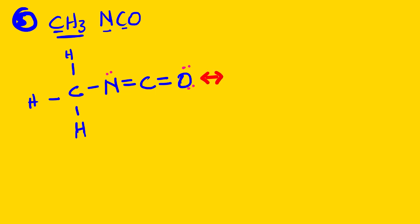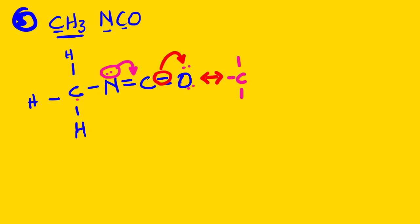Let us look at the resonance structure. We can take these electrons and bring them here. Since carbon — if we remove this single bond — carbon will bond three times, we take these electrons and bring them here. Then between nitrogen and carbon we are going to have a triple bond. This part doesn't get affected. So here we have a triple bond.